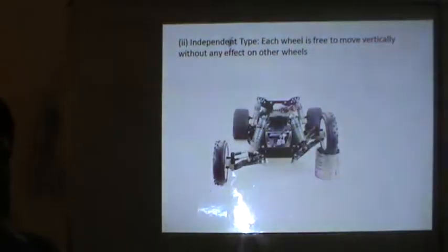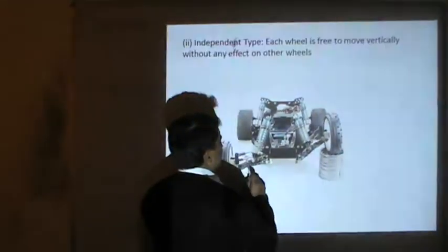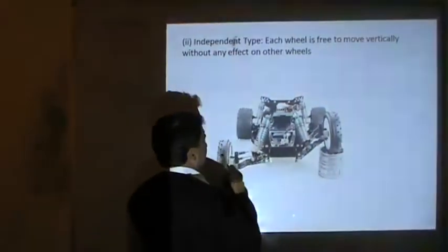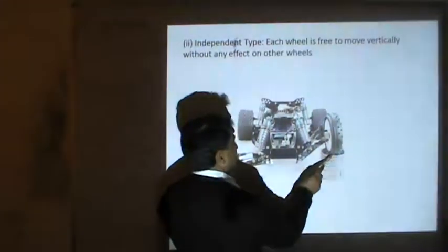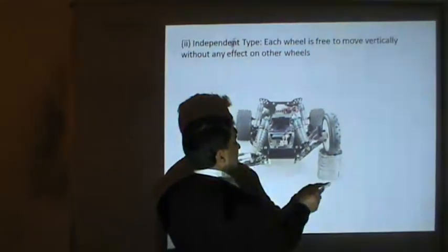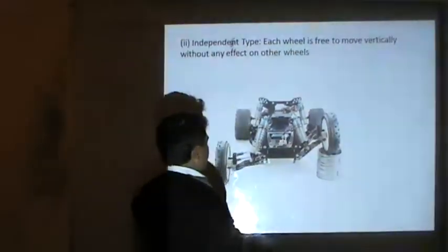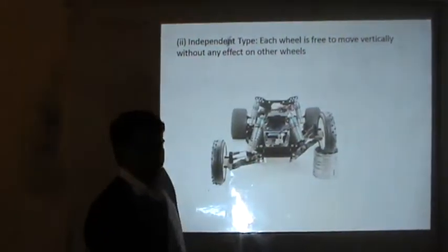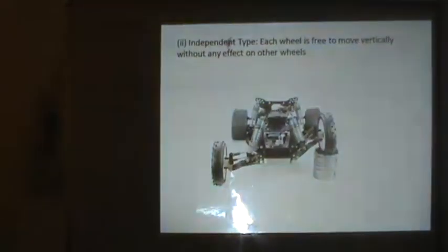The second, more modern type is called independent suspension, in which wheels are free to move vertically without affecting other wheels — they are not connected by solid shafts. As shown in the diagram, when one wheel hits a bump on the road and deflects upward, the positions of the other three wheels remain the same on the ground. This is an independent suspension system and it provides more stability to the vehicle.